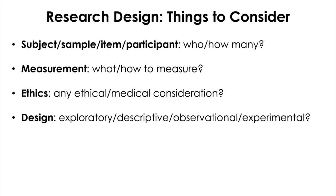Measurement is directly related to data collection, and for quality data collection you need to choose carefully what you measure is what you intend to measure. There can be multiple ways or equipment to measure the same construct — for example, to measure visual acuity there are many different ways depending on the purpose of your research. If your research involves human subjects then you need to go through the ethics board, and when there are special populations or patients you need to take extra steps to ensure their well-being. Finally, you need to think about the actual design of your research.